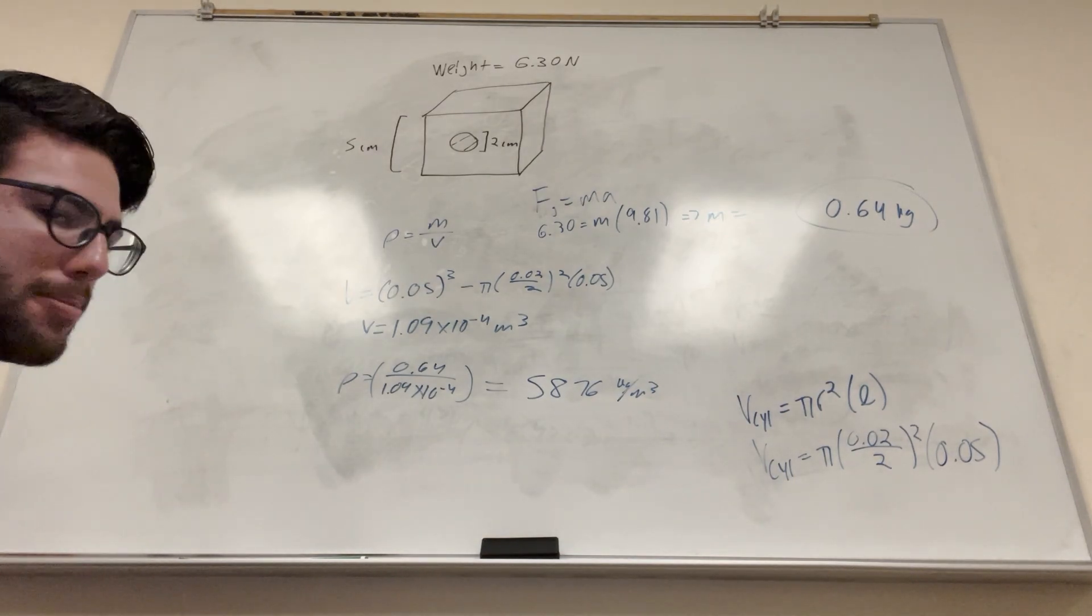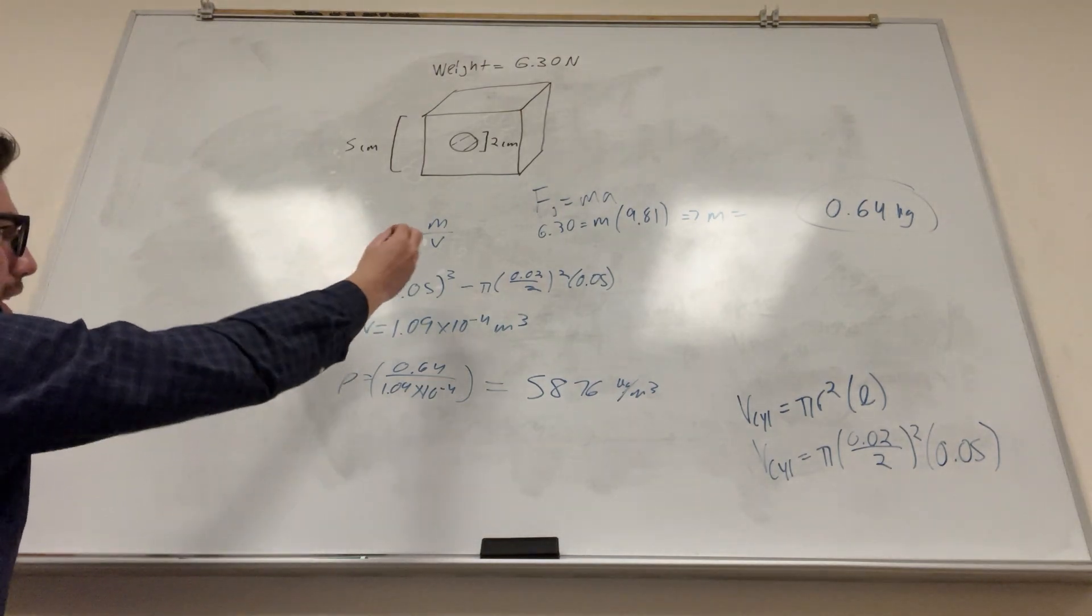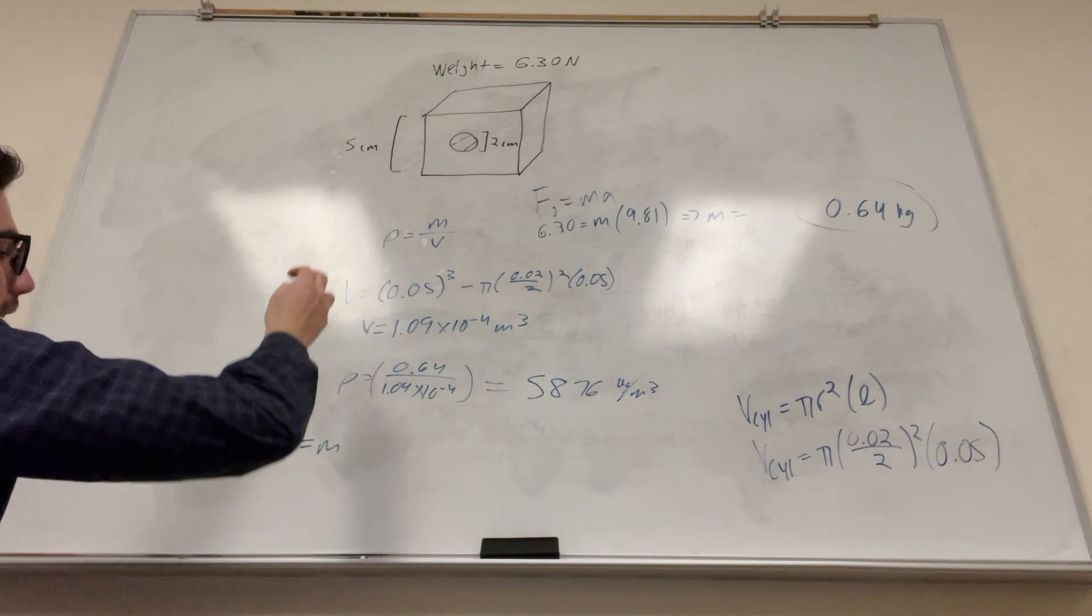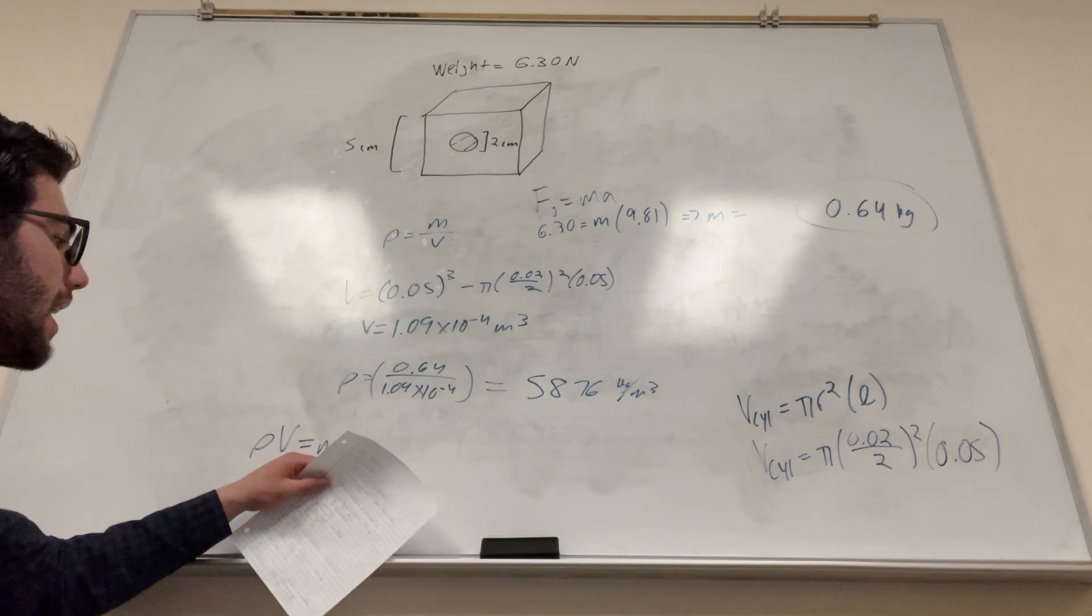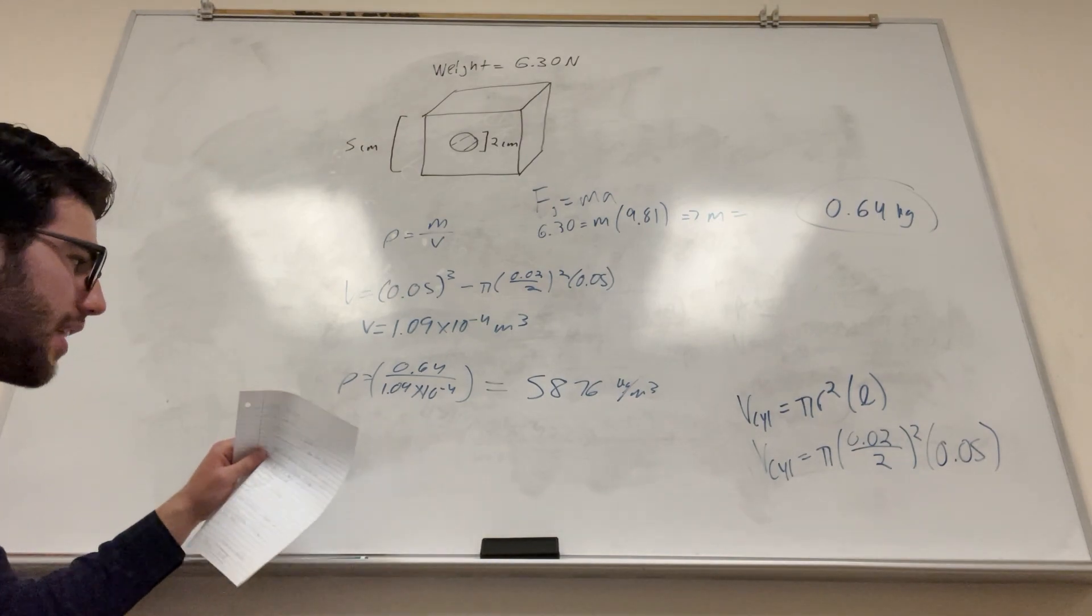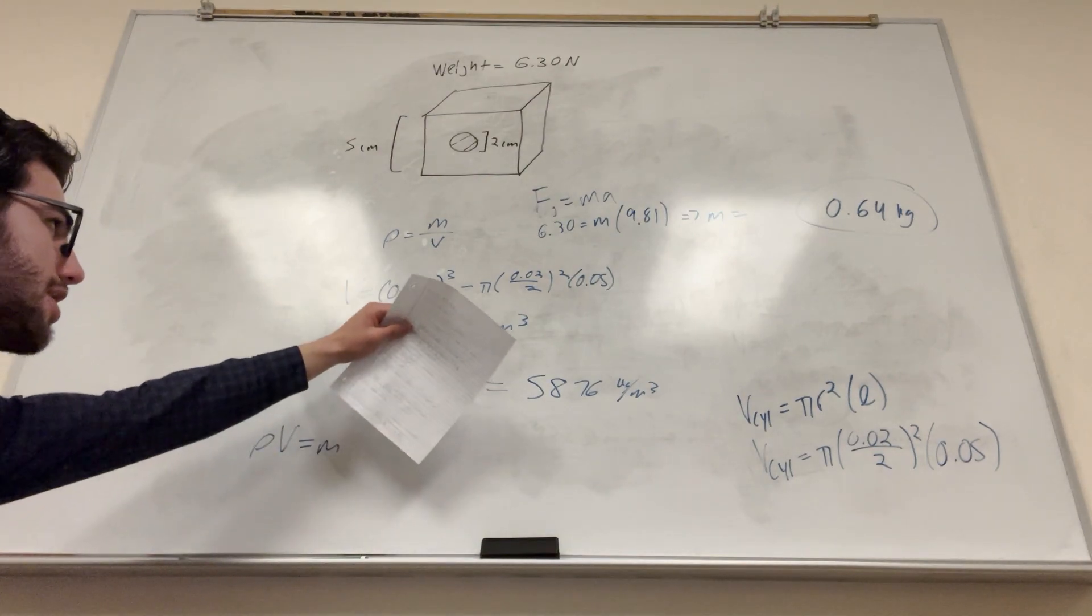So then part B asks us to find the mass before we drill it. So again, we can rewrite this formula. We're trying to find mass this time. So we're going to say density times volume is equal to mass. So we know the density now. We found the density. Now we need to find the volume of the cube before the thing was drilled in it, which is going to be way simpler.